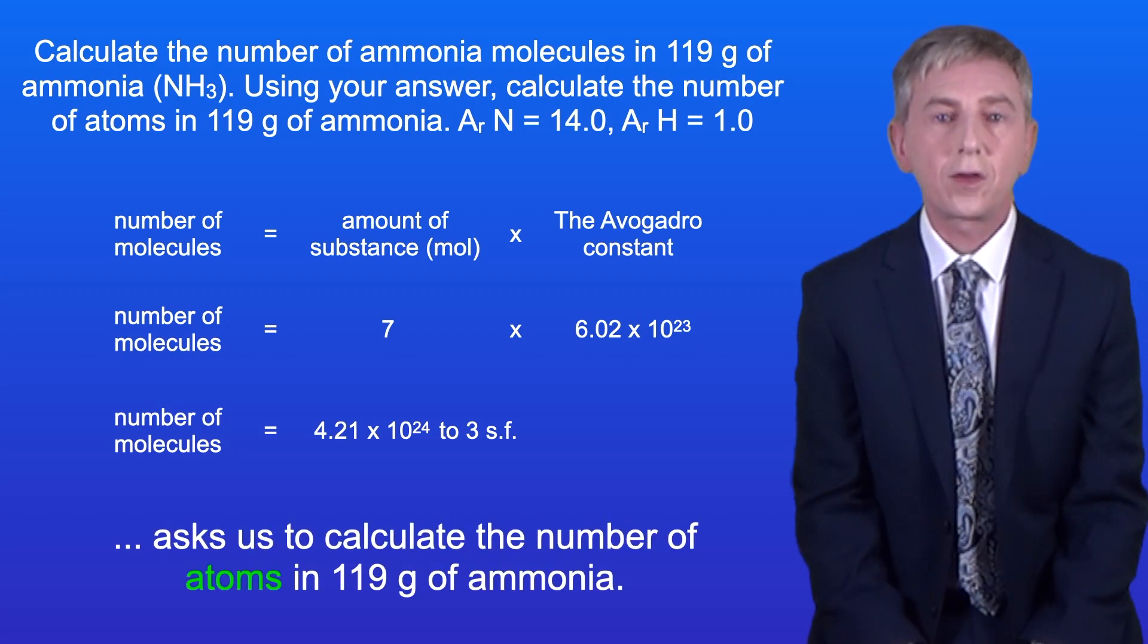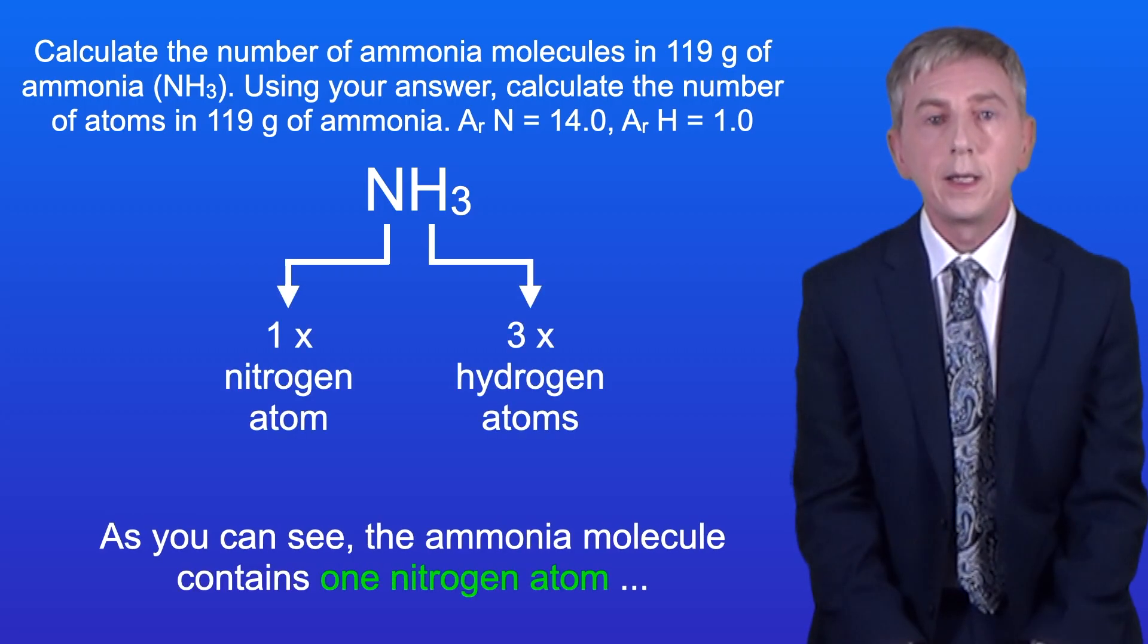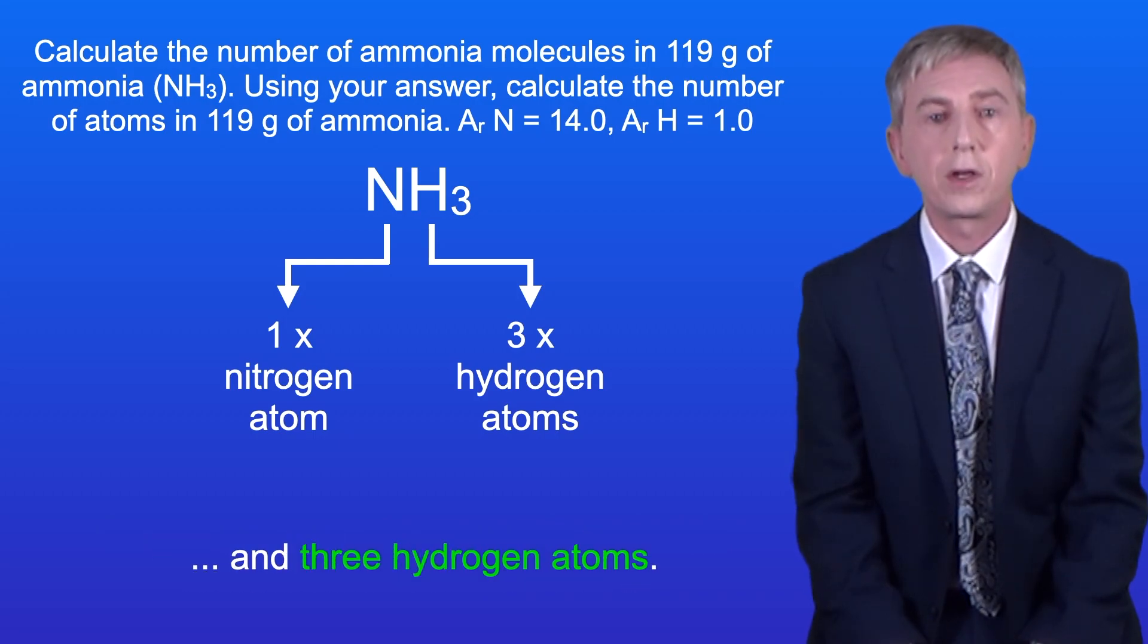The second part of the question asks us to calculate the number of atoms in 119 grams of ammonia. Now to answer this we need to look at the formula for ammonia. As you can see, the ammonia molecule contains one nitrogen atom and three hydrogen atoms. In other words, four atoms in total.